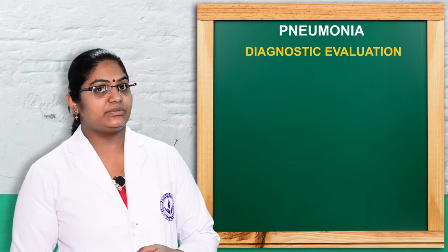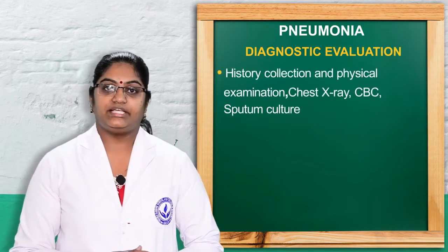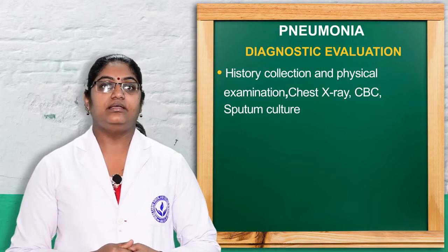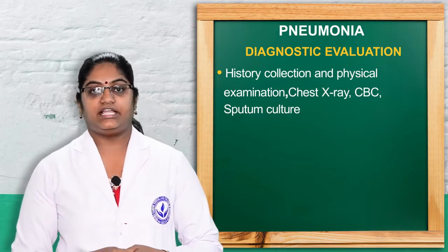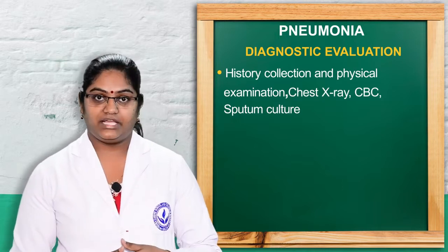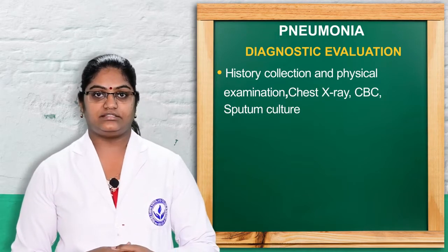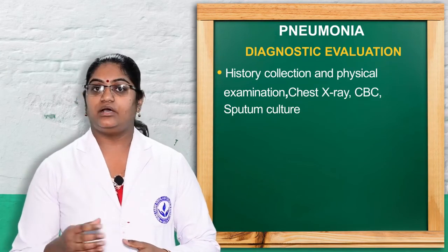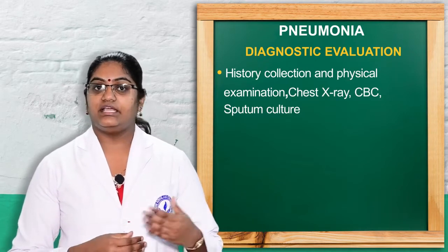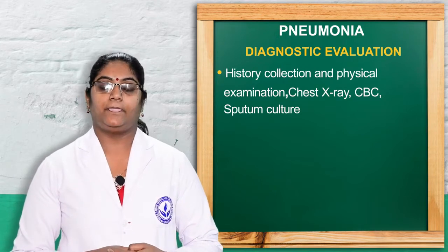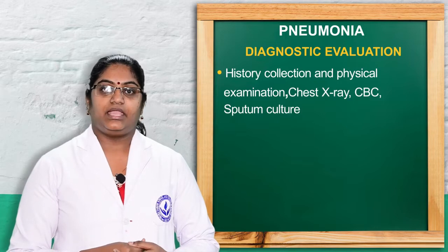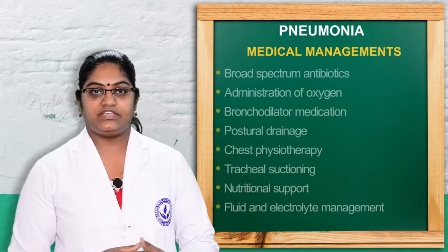Next we can discuss the diagnostic evaluation. Before going to diagnostic evaluation, we should collect patient history and perform a physical examination as the primary step. We ask the patient about any exposure to air pollution or habits like cigarette smoking. Physical examination includes auscultation and head-to-foot examination to analyze signs and symptoms. After history collection and physical examination, we proceed to CBC complete blood test, chest X-ray, and sputum culture.